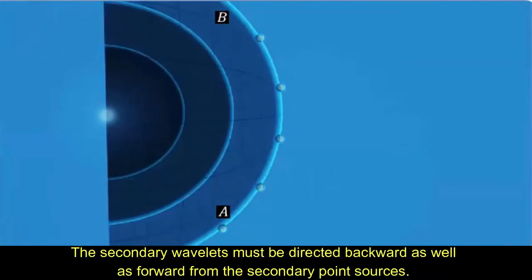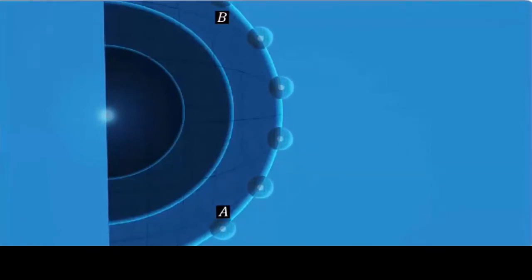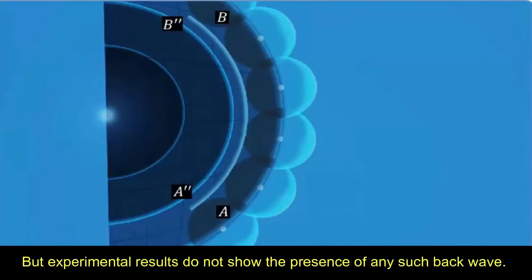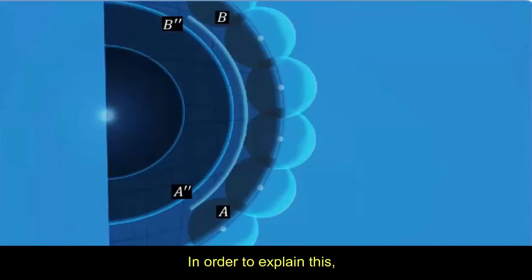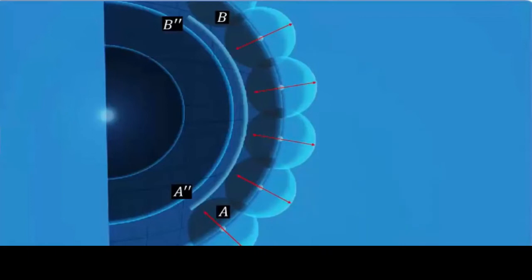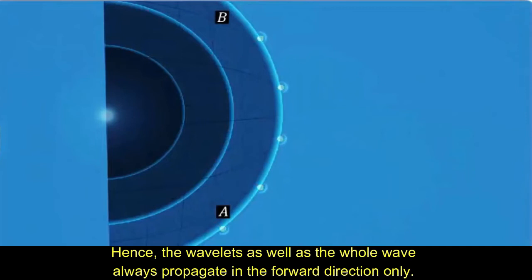The secondary wavelets must be directed backward as well as forward from the secondary point sources. If this would be correct, we would get a surface such as A-B- as a back wave. But experimental results do not show the presence of any such back wave. In order to explain this, Huygens proposed that the intensity of the spherical wavelets is not uniform in all directions but is maximum in the forward direction and zero in the backward direction. Hence, the wavelets as well as the whole wave always propagate in the forward direction only.